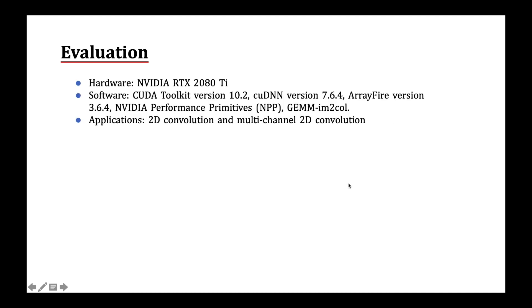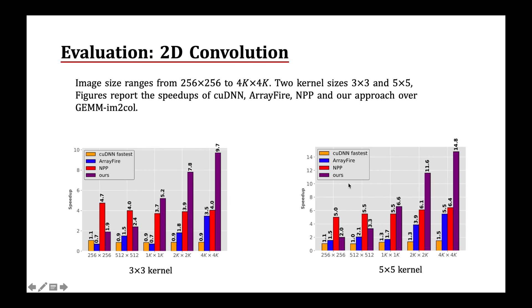We conduct our experiments on an NVIDIA GPU card using CUDA Toolkit 10.2, cuDNN 7.6.4, OpenCL 3.6.4, and Media Performance Primitives with GEMM image-to-column as a baseline. The tested applications are 2D convolution and multi-channel 2D convolution. For 2D convolution, the tested image size ranges from 256 to 4K. The figures report the speedups of cuDNN, OpenCL, MPP, and our approach over image-to-column. Our approach exhibits superior performance over other implementations as the image size increases.